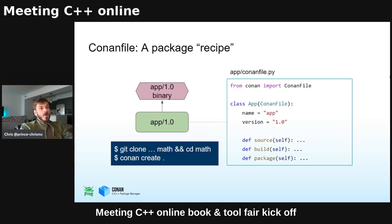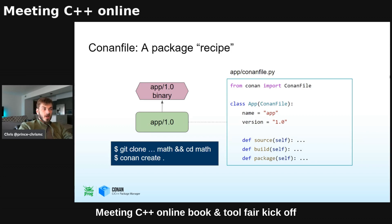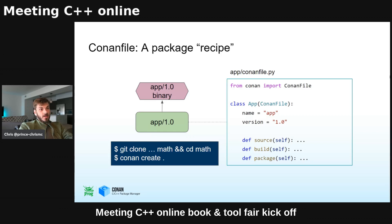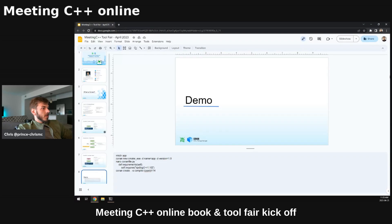I mentioned a recipe. Our app is going to have one — we're going to use Conan to build and distribute it. We figured out how to install dependencies, but we need a recipe for how to build and package. Our app will have a binary and a conanfile with a source method, a build method, and a package method. This works the same way — you clone your repository and instead of doing conan install, we do conan create.